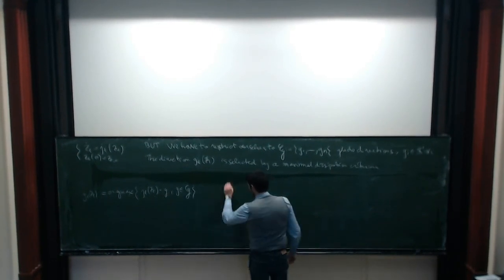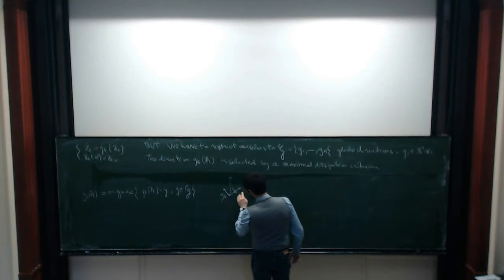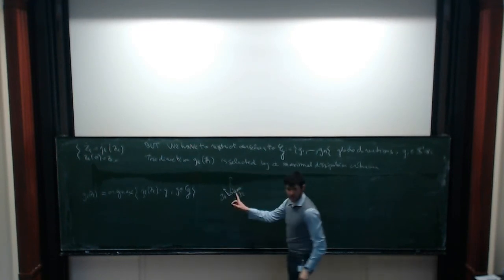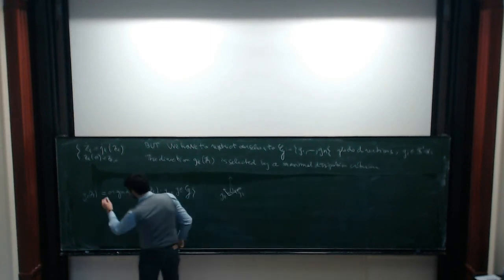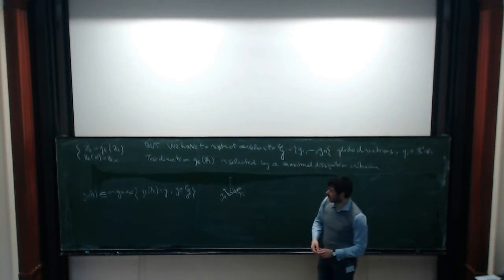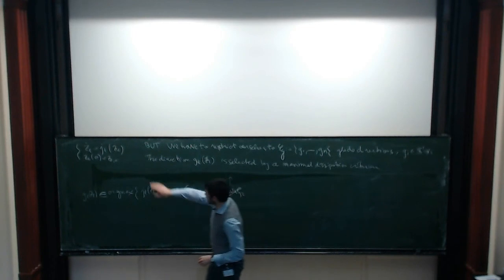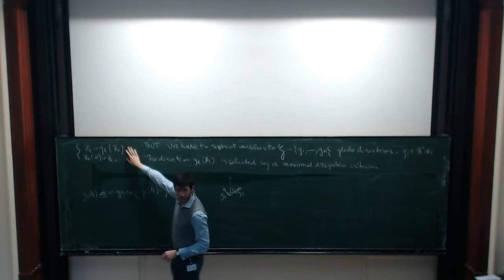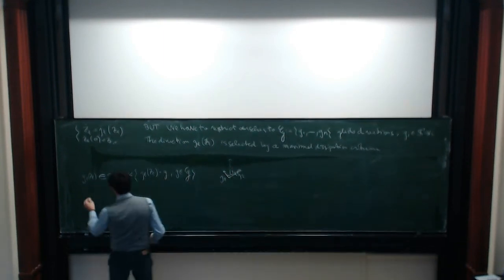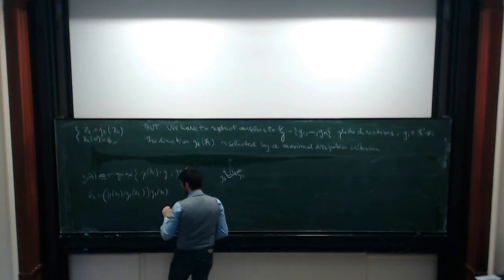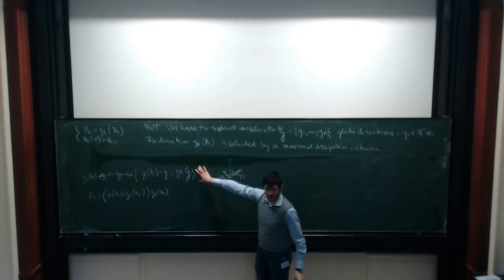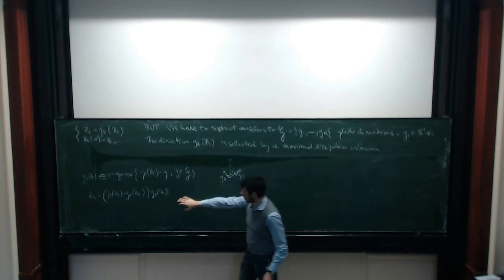This works until the force J_L lies precisely at the bisector of two directions, making both maximizers simultaneously. In that case, the argmax must be replaced by a set-valued map, giving a multi-valued right-hand side. The correct formula becomes z_dot_L belongs to J_L dotted with the maximizing direction along that direction — but the right-hand side is now a set. This is the heart of the differential inclusion formulation.